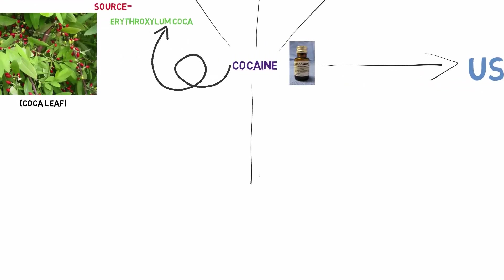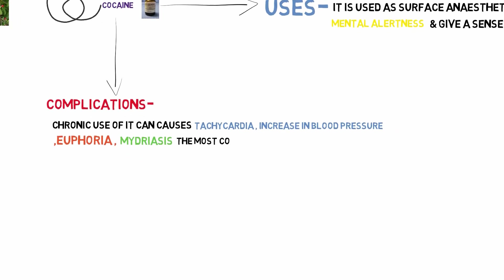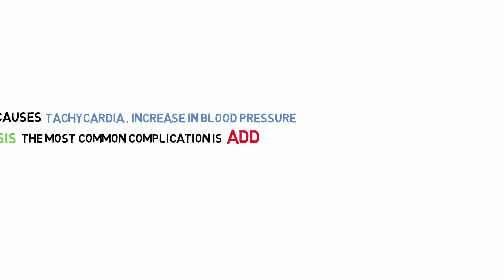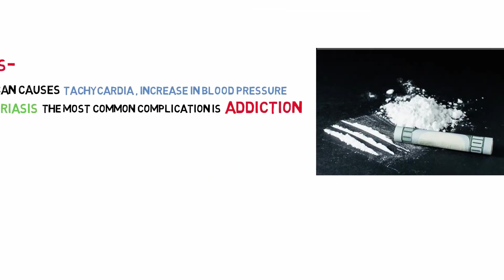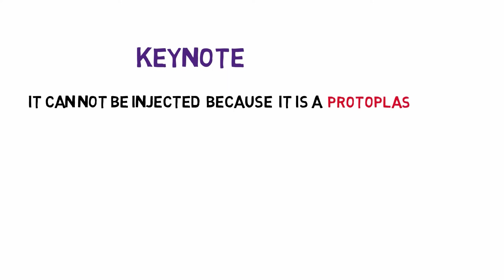Complications: Chronic use of it can cause tachycardia, bradycardia, high blood pressure, euphoria, mydriasis. And the most common complication is addiction. For this reason, it is rarely used nowadays. Key note: It cannot be injected because it is a protoplasmic poison which causes tissue necrosis and prominent CNS stimulation.